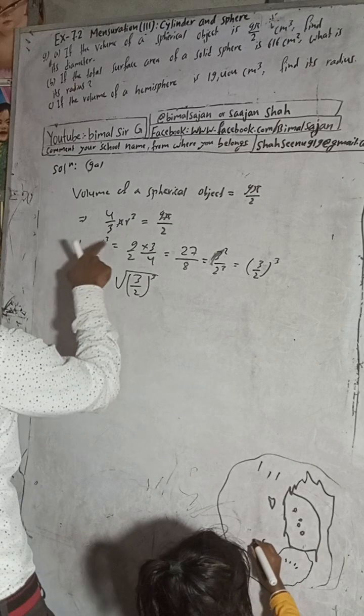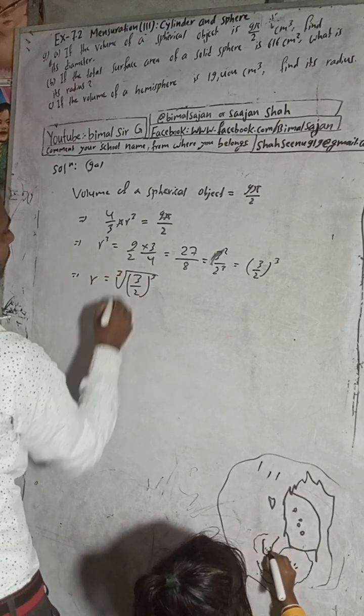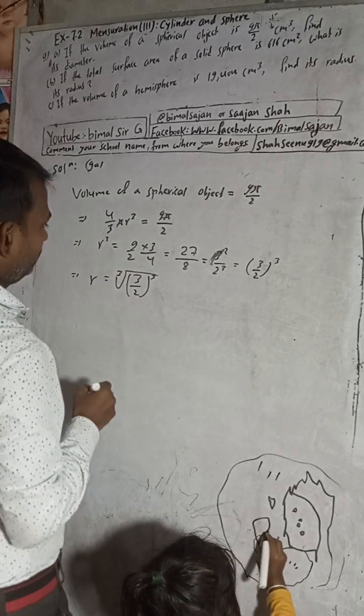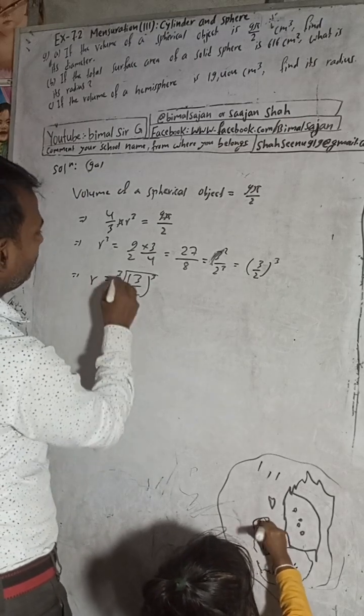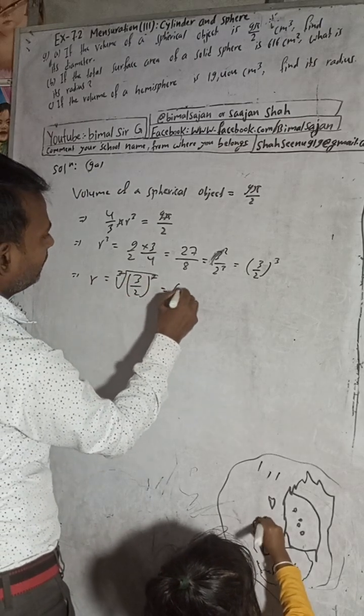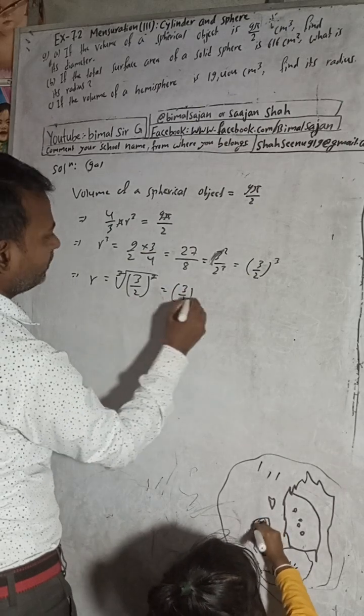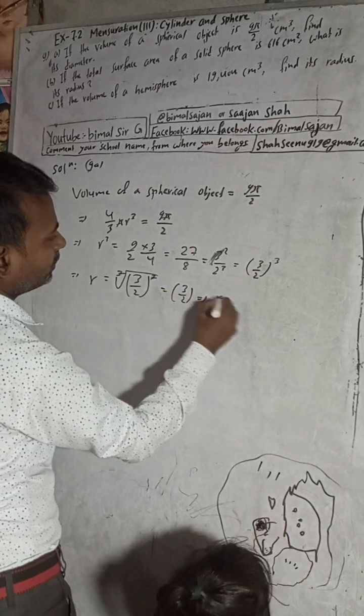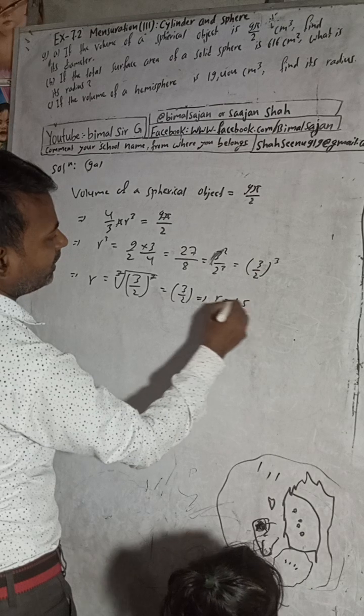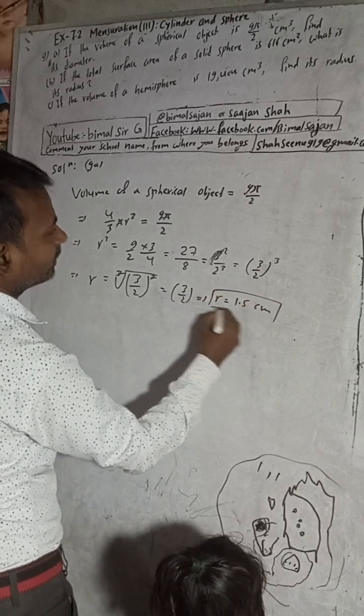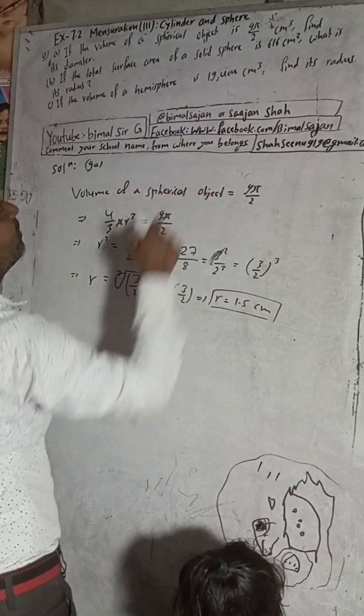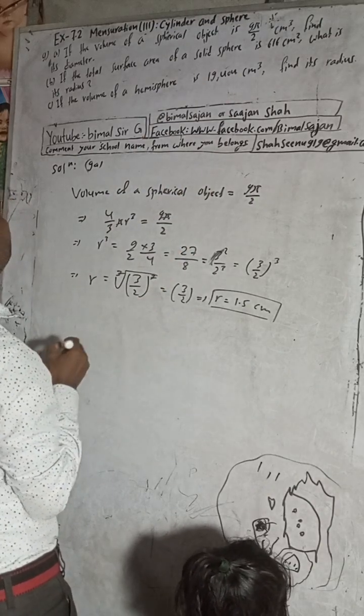We have taken this r. So take this cube root. Now this 3 cancel, we get here 3/2. r is equal to 3/2, this implies r is equal to 3/2 is equal to 1.5 or 3/2. This is our centimeter, because this is in cm³.